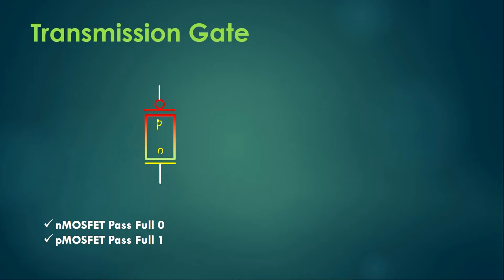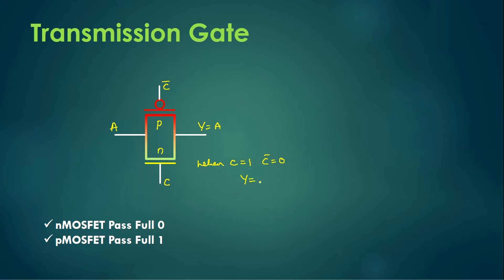In the two transistors, the gates are connected with the control input. If we provide the pass value as A, the output will be A itself — it depends on the control input. Let the gate of the N transistor be C and the gate of the P transistor be C bar. When C is equal to 1, C bar will be 0, and whatever value is provided from A will be available at output Y. When C is equal to 0, C bar is equal to 1, and Y will be in a high impedance state — the output will be tri-stated to Z.